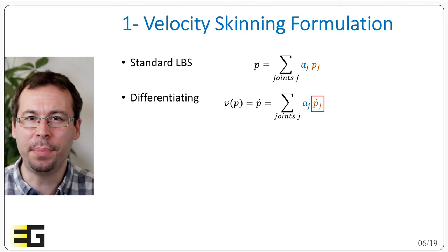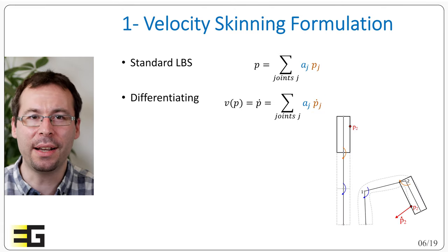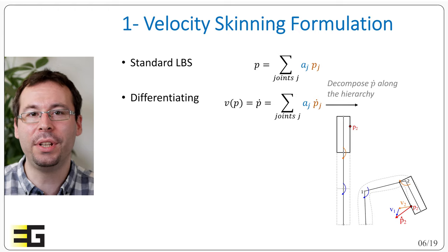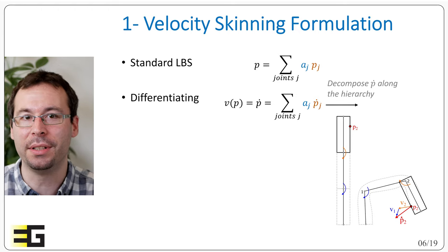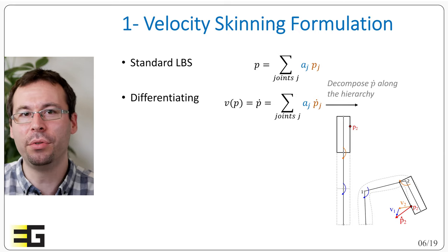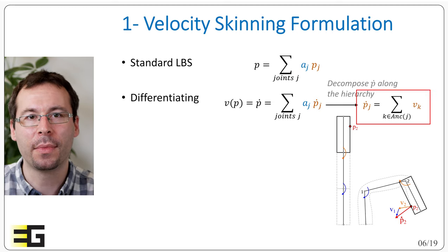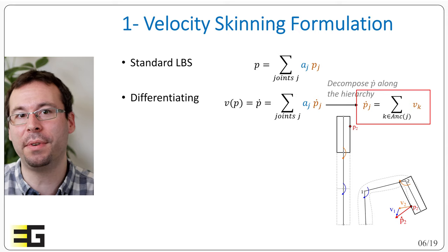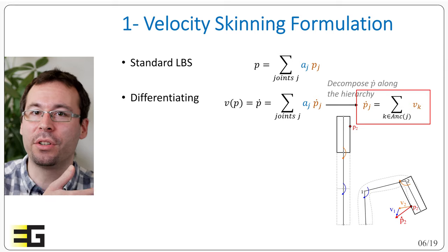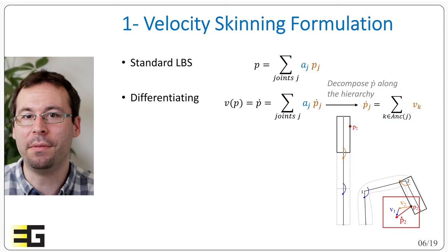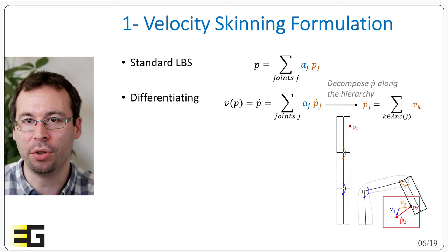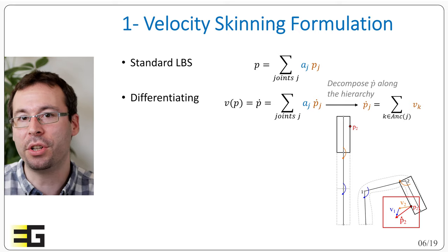And now we can look at what is p_j prime. It's the velocity of a vertex that is attached to an articulated system. So we can actually decompose this velocity along the hierarchy as a sum of relative velocities. Let us call v_k the relative contribution of the joint k to the velocity of p_j prime. And we can actually write p_j prime as the sum of all these relative velocities. p_j prime is equal to the sum of the v_k with k being all the ancestor joints of j. In this example the final velocity of p_2 at joint 2 is the sum of the contribution v_2 brought by the rotation of joint 2 and the contribution v_1 brought by the rotation of joint 1.